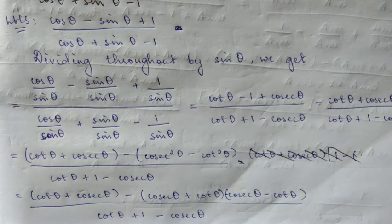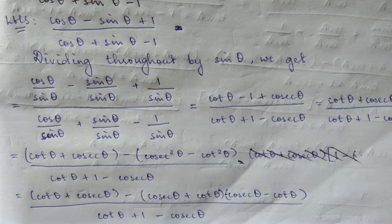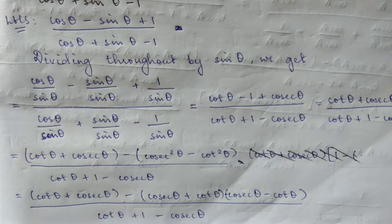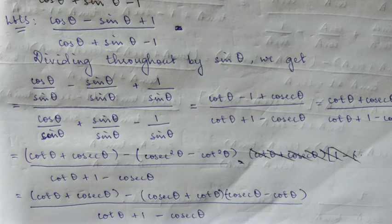Cosec squared minus cot squared can be converted using the a squared minus b squared formula: a plus b into a minus b. So it will become cosec theta plus cot theta, into cosec theta minus cot theta. In the numerator, one term cancels out with the other, leaving cot theta plus cosec theta.